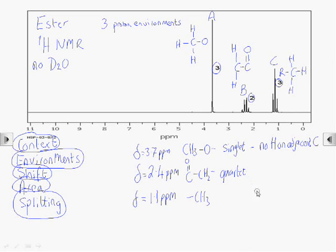Peak B is a quartet. That tells us there are three hydrogens on the carbon adjacent to this. So it's looking very much like the methyl group is connected to that CH2.